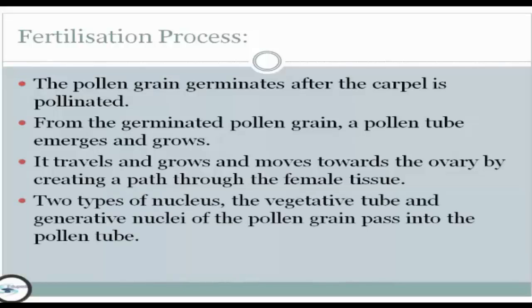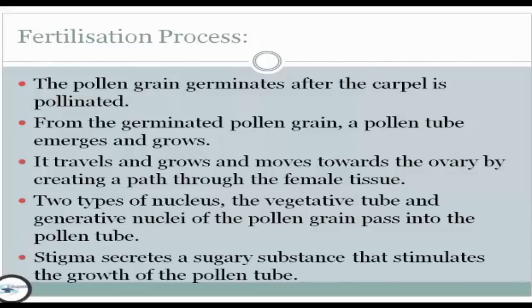There are two types of nucleus. The first is the vegetative tube nucleus and the second is the generative nucleus. Both nuclei of the pollen grain pass into the pollen tube. The stigma secretes a sugary substance that stimulates the growth of the pollen tube.